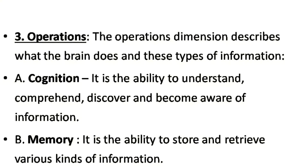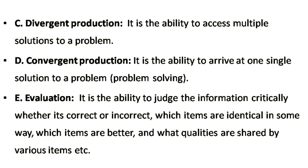The third dimension is operations. The operations dimension describes what the brain does, and these types of information are: cognition, the ability to understand, comprehend, discover, and become aware of information; memory, the ability to store and retrieve various kinds of information when in need; divergent production, the ability to assess multiple solutions to a problem; convergent production, the ability to arrive at one single solution to a problem; and evaluation, the ability to judge information critically — whether it is correct or incorrect, which items are identical in some ways, which items are better, or what qualities are shared by various items.